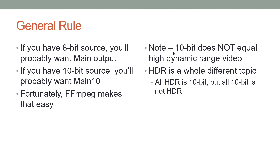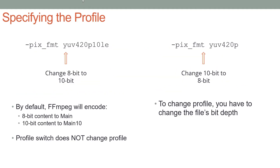FFmpeg makes this easy. Note that 10-bit does not equal HDR — all HDR is 10-bit, but not all 10-bit is HDR. To specify the profile, you actually don't specify the profile directly. Instead, you change the pixel format, and FFmpeg will automatically select main or main10 depending on the output pixel format. You don't need to use the profile setting in the command string at all.